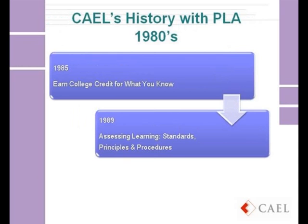At the end of the three-year project, the network of institutions wanted to continue their work around prior learning assessment, so CAEL incorporated as a nonprofit higher education organization. A landmark event in 1979 was that three associations — AACRAO, the American Council on Education, and the Council on Higher Education Accreditation — all endorsed CAEL's Principles of Good Practice in Prior Learning Assessment. In the 1980s, CAEL published two books still in use today: Earn College Credit for What You Know, directed at adult learners, and Assessing Learning: Standards, Principles, and Procedures, for staff and faculty.